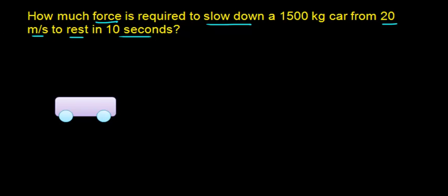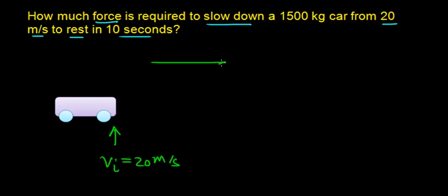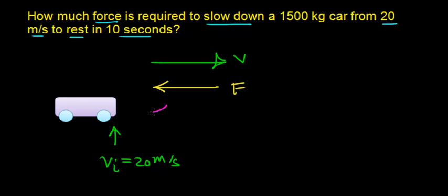Let's summarize some of the information given to us in this problem. Initially, this car is going to be moving with an initial velocity of 20 meters per second, and so the velocity is going to be in this direction. In order to stop this car, we're going to have to apply a force in the opposite direction that it's traveling. Newton's second law says that an object accelerates in the direction of the net external force, so the acceleration of the car is going to be in the opposite direction of the car's velocity.